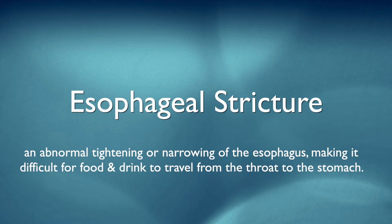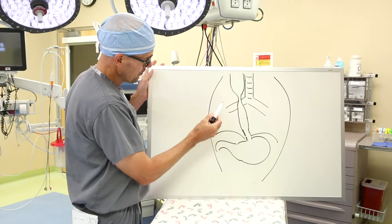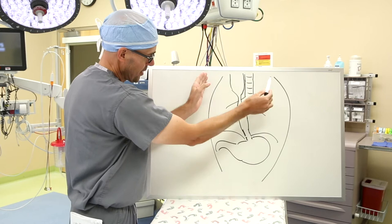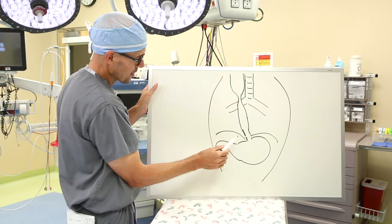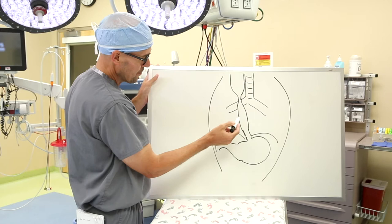A stricture means a narrowing, so in this schematic drawing here, this is like a child's torso, this would be the chest, the diaphragm muscles separating into the abdomen, and this is the trachea here and the esophagus going into the stomach. So a stricture here you can see is a narrowing of the esophagus.